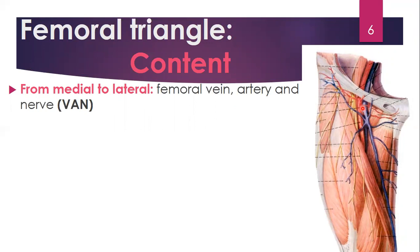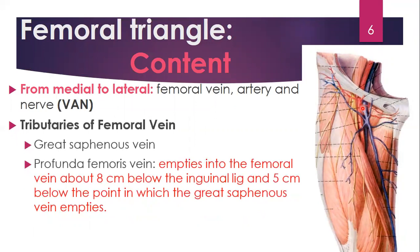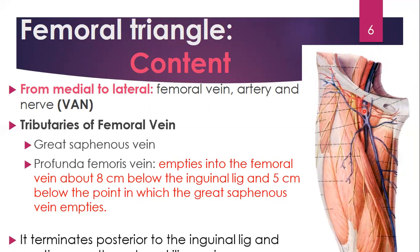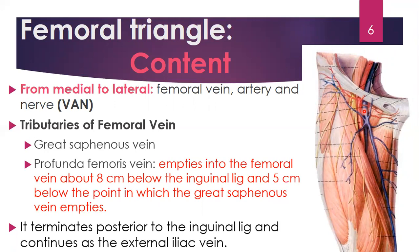That helps us remember that the femoral nerve is most lateral. This femoral vein has tributaries — it receives tributaries from the great saphenous vein and also from the profunda femoris vein. They all empty into the femoral vein. It terminates posterior to the inguinal ligament.